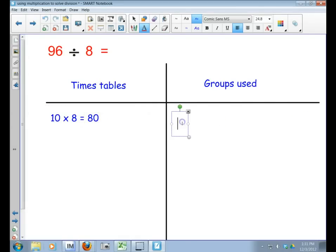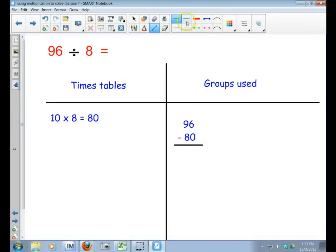I started with 96 Snickers bars and I'm subtracting 80 because I've already given my friends 10 groups, and in each group there were 8. So now I'm going to subtract: 96 minus 80. If I take 6 away from 6, that's 0, and then 9 take away 8 equals 1, so my answer is 16.